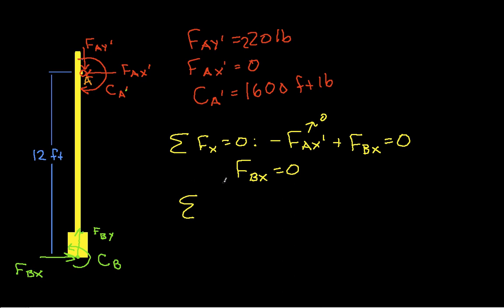Summation in the Y direction is equal to 0. We have FAY prime—this is going down, so it's negative—plus FBY equals 0. FAY prime is 220 pounds. Wait, this tells me I forgot something. Some of you are probably screaming: wait, you forgot the weight of your pole. We have the weight of the pole going down here, and the weight of the pole was 400 pounds. I'm glad I corrected that, and I'm hoping you're glad I corrected that too.